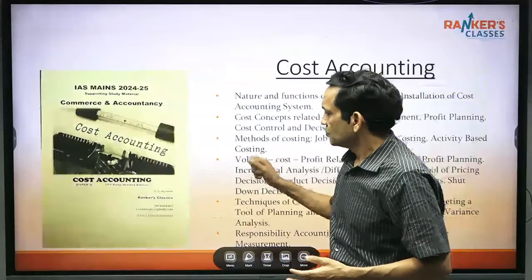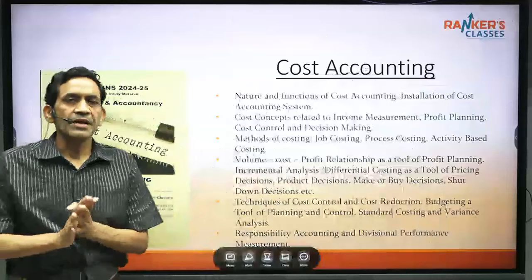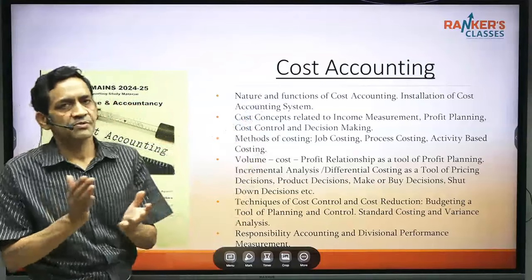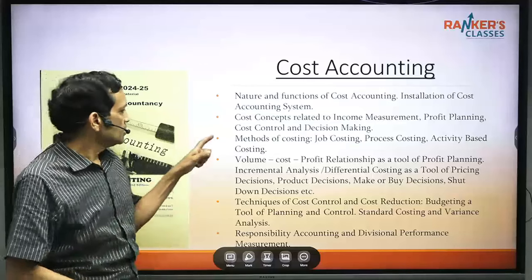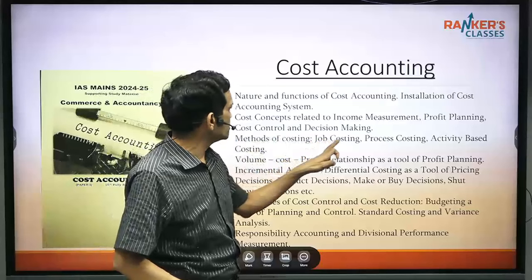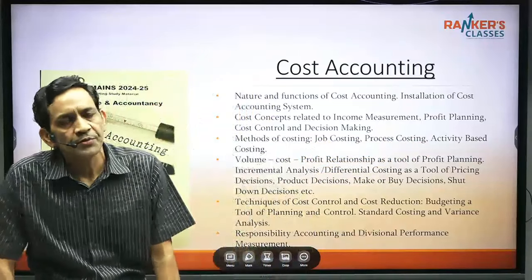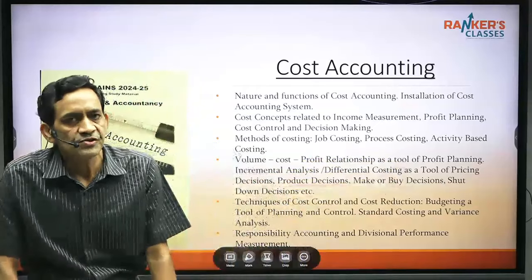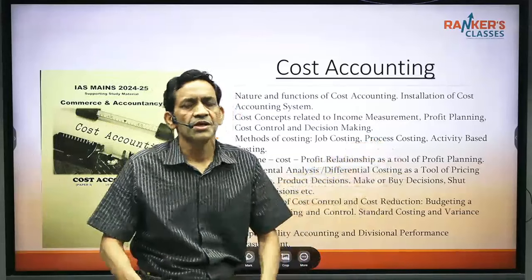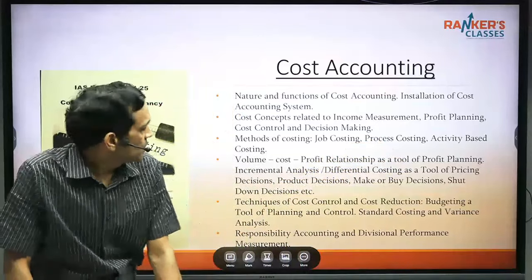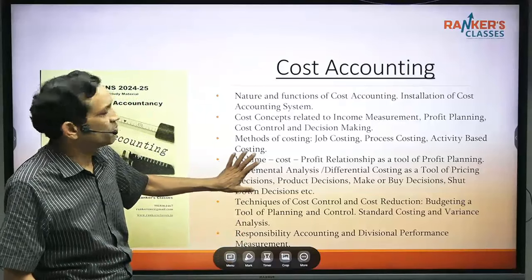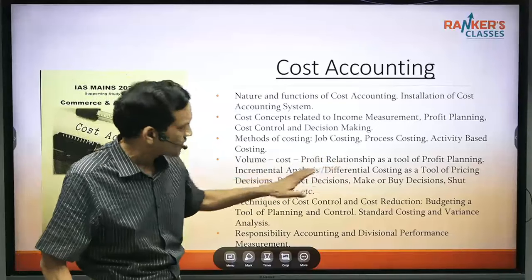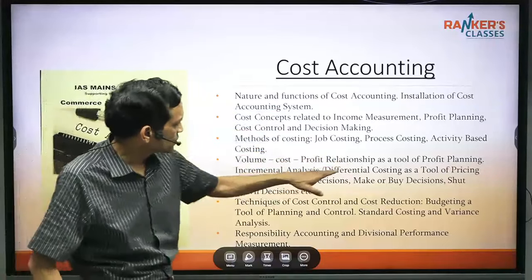Cost Accounting has mainly five chapters. First is Cost Concepts — introductory, 10–12 pages, generally theory questions asked. Second is Methods of Costing — three methods included: job costing, process costing, and activity-based costing. Job costing and activity-based costing are very short (3–5 pages each); process costing is larger (~20 pages) and can be skipped since optional questions are available. Third is Marginal Costing and CVP Analysis — very important, easy, and requires practice.